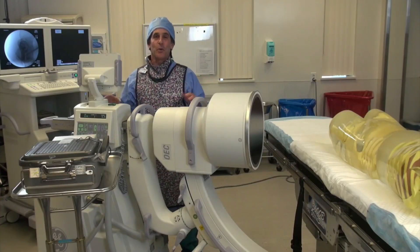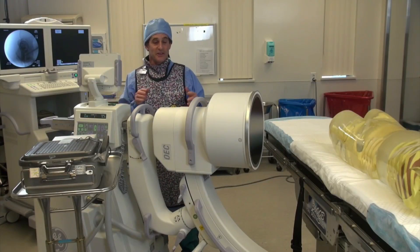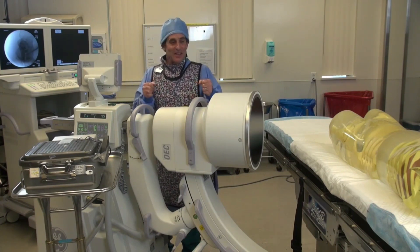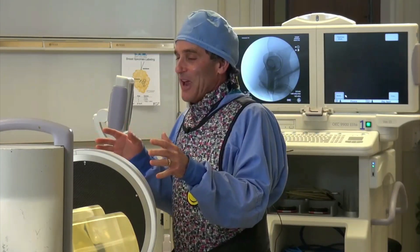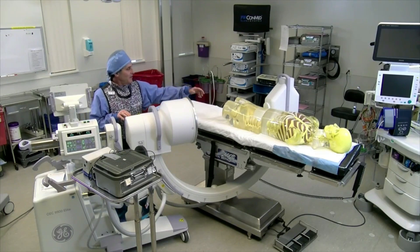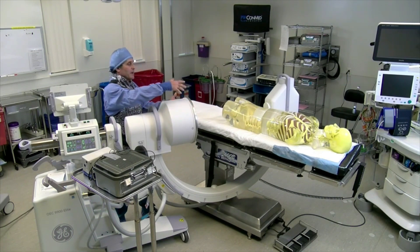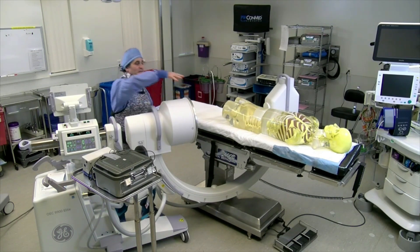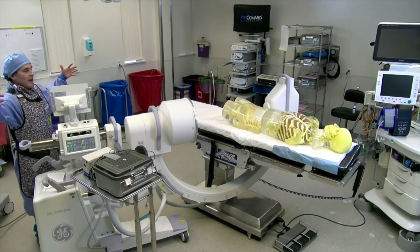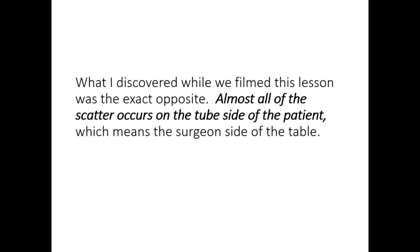I have been a tech for well over 35 years, and it really wasn't until we did this scene that I found out I was wrong the whole time about where scatter is happening. I always figured x-rays come out, hit the patient, go through the patient, come over to your side, and because it's scattered it's bigger and creates this whole area of radiation everywhere. What I discovered while we filmed this lesson was the exact opposite — almost all of the scatter occurs on the tube side of the patient, which means the surgeon's side of the table.